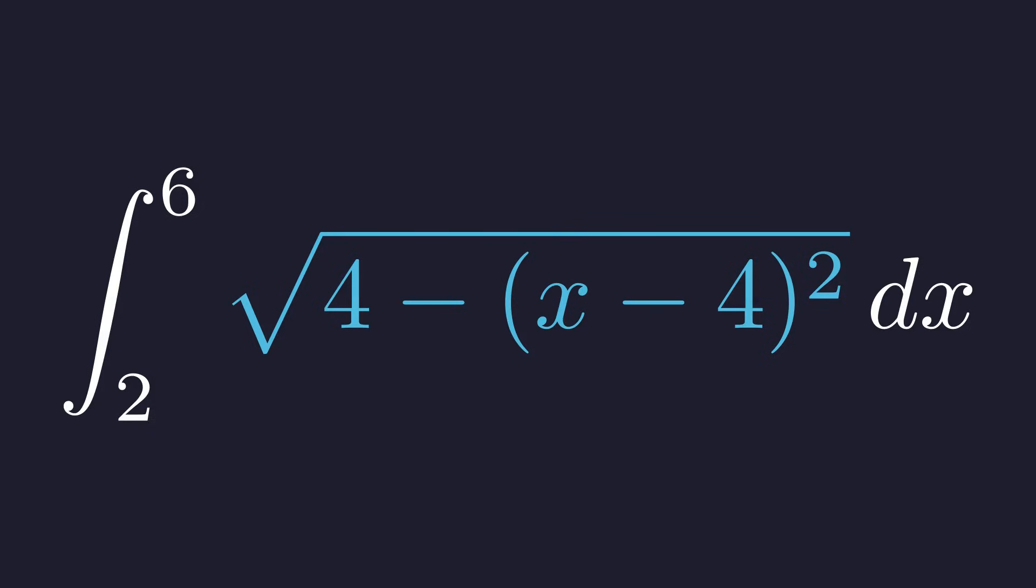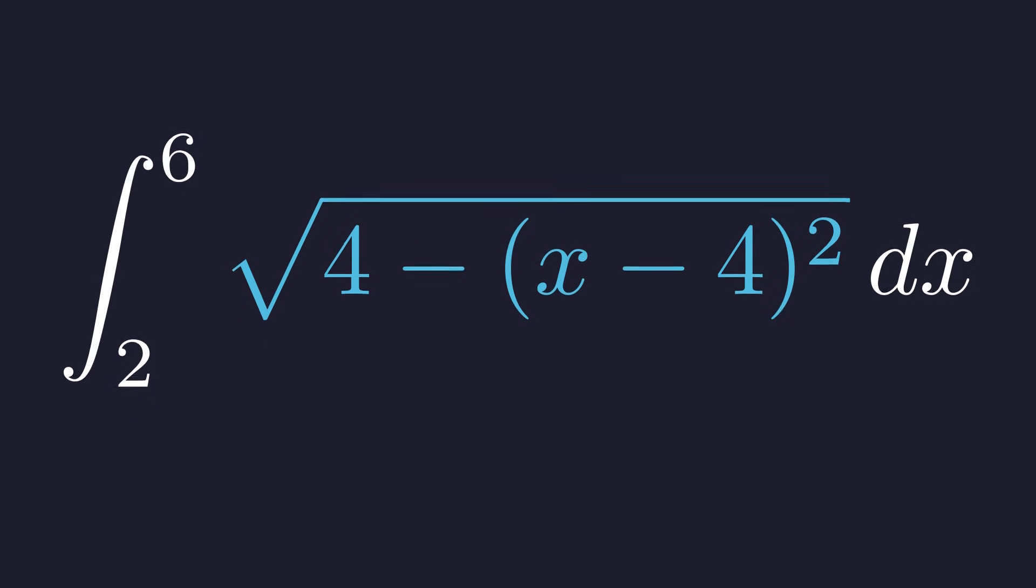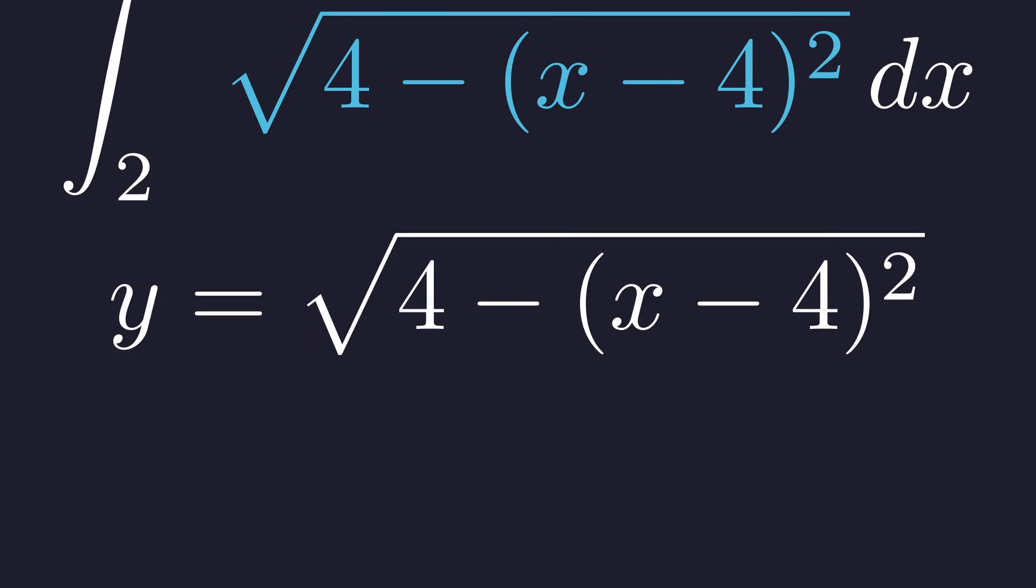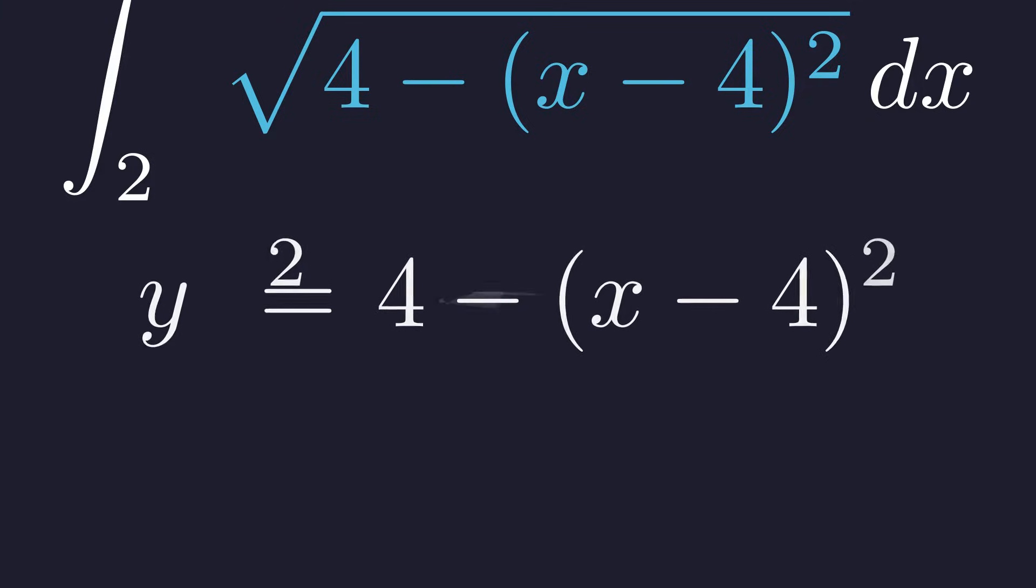Let's analyze the function y equals the integrand. This function defines the curve whose area we are calculating. We set y equal to our function. Because of the square root, y must be non-negative, which means we are dealing with the upper half of a shape. To make the underlying structure clearer, let's square both sides of the equation to eliminate the square root. This gives us y squared equals 4 minus the quantity x minus 4 squared.